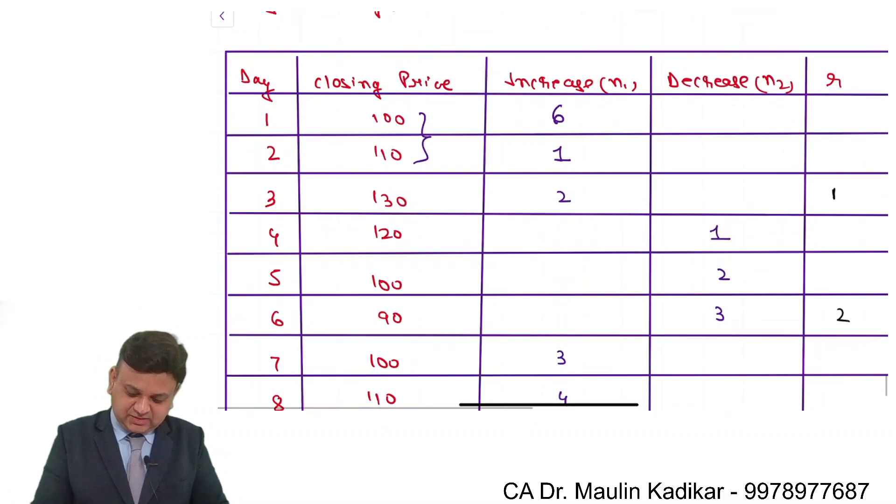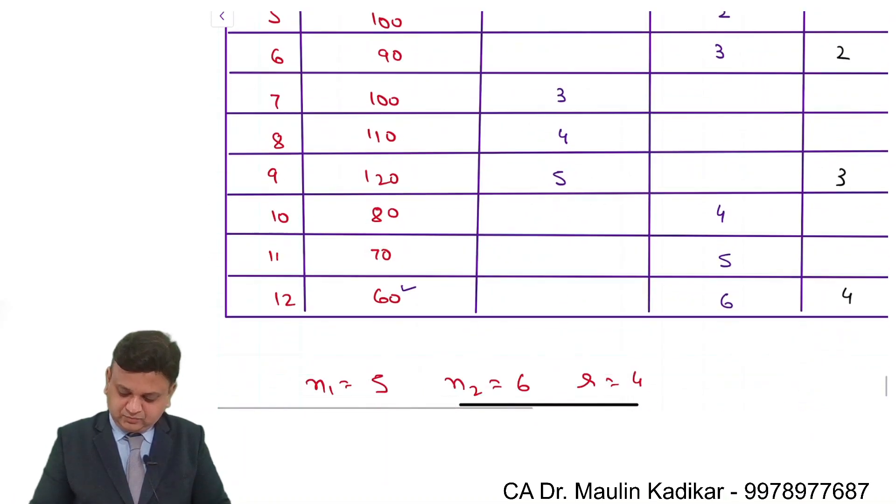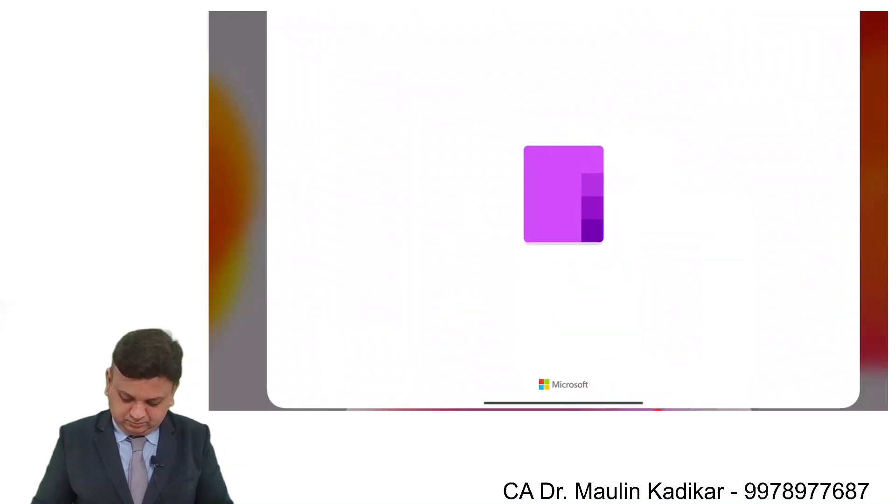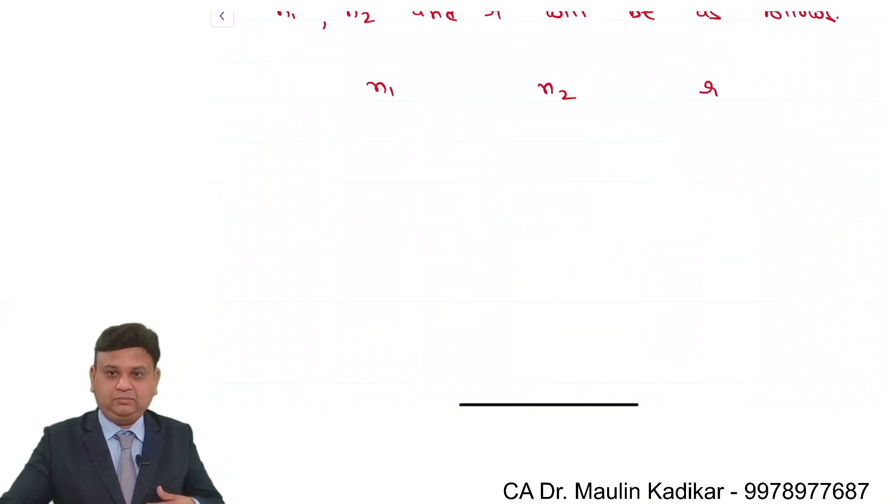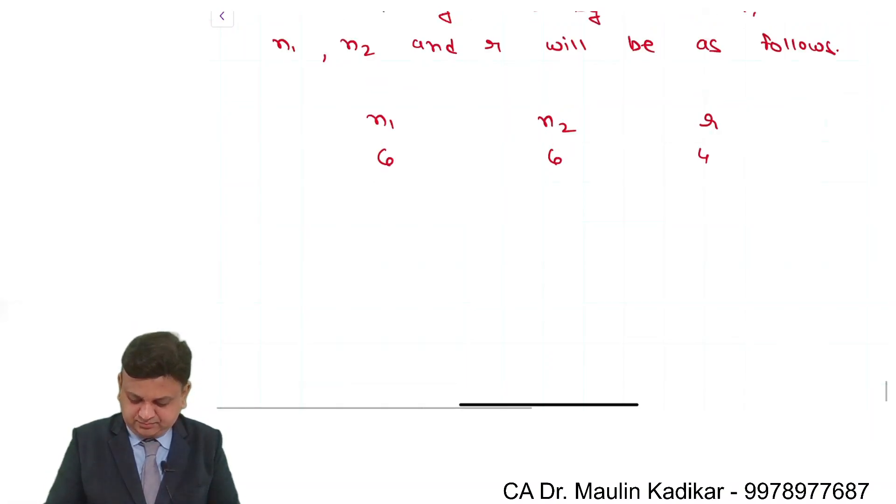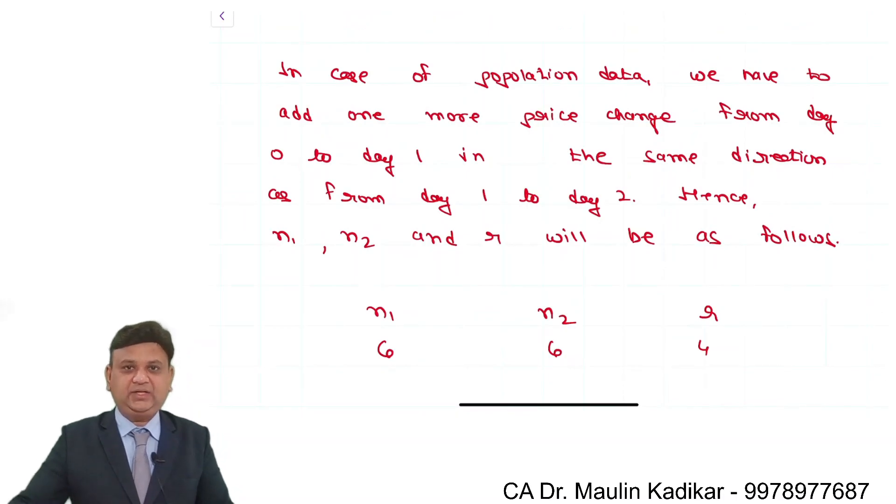So n1 will be 6, n2 will be 6, and r will be 4. So it is over here: 6, 6, and 4. That's the answer.